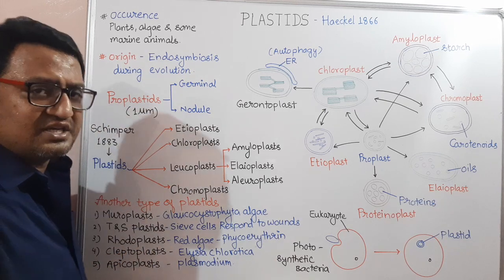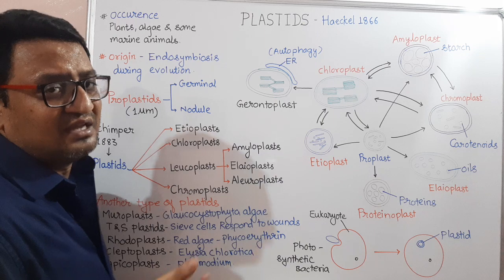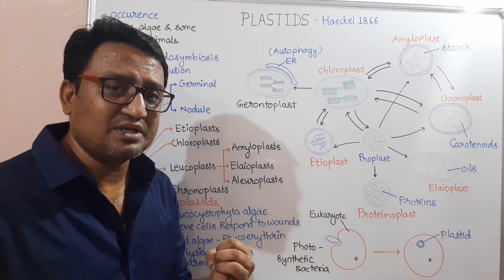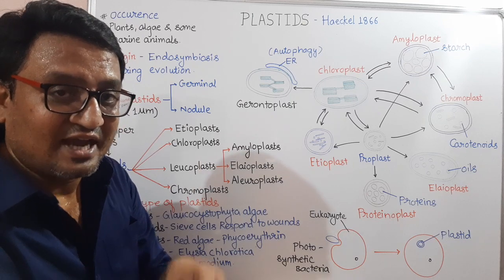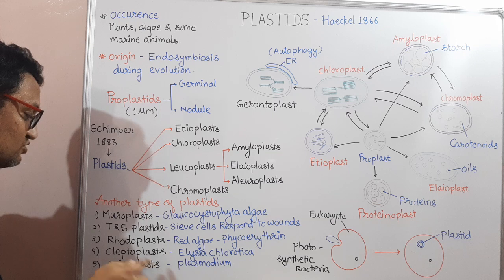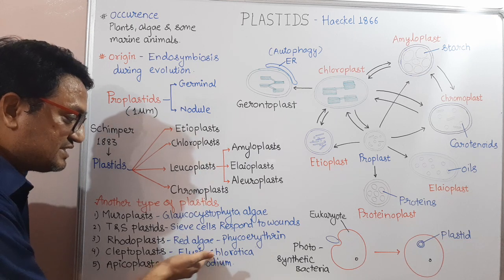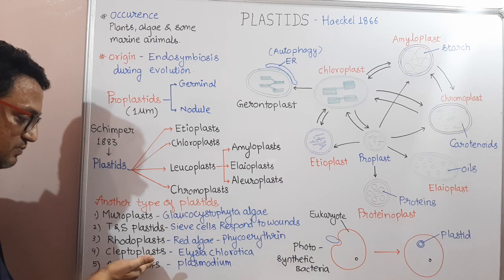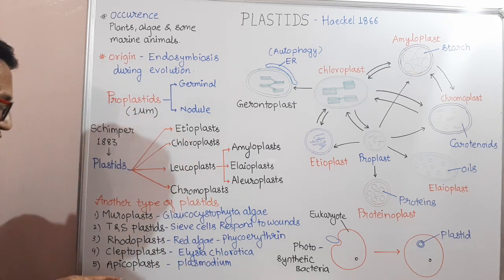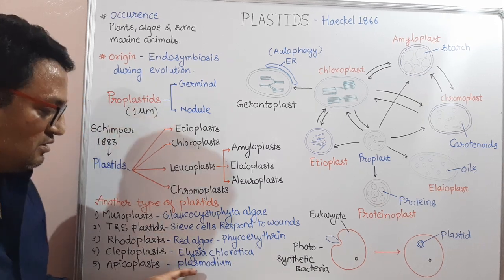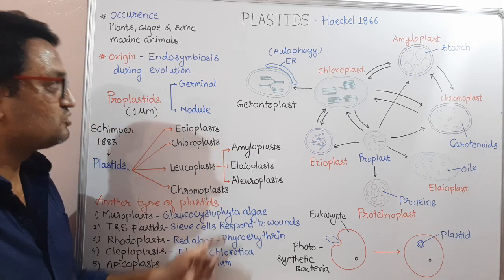Next is Kleptoplasts. An interesting example is a marine gastropod called Elysia chlorotica. When it eats green algae, instead of digesting it, the green algae is incorporated into this marine gastropod or mollusk, and through photosynthesis it takes food material from the green algae. Such Plastids that photosynthesize for this organism are called Kleptoplasts. Finally, Apicoplasts are present in the parasitic organism called Plasmodium.